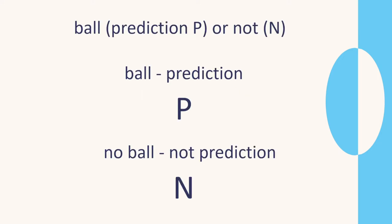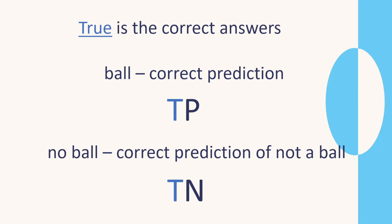We have a ball as our prediction — P for positive — or we predict it's not a ball, which is N for negative. If we get it correct, it's true. So if we say it's a ball and we get it correct, it's TP — true positive. If we say no ball and we're also correct, that's a true negative. So true positive means correctly predicting a ball, and true negative means correctly predicting no ball.